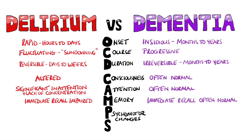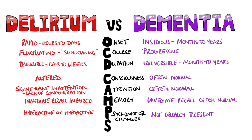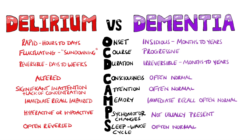P is for psychomotor changes, which as we mentioned in delirium can be hyperactive or hypoactive, whereas in dementia, psychomotor disturbances are not usually present. Finally, we have S for sleep-wake cycle, which again can be altered in both, but is often significantly different in delirium. Often, a complete reversal of the sleep-wake cycle is present.